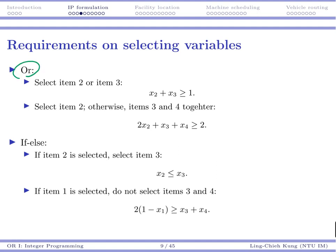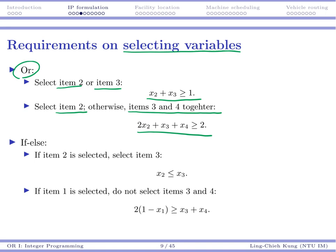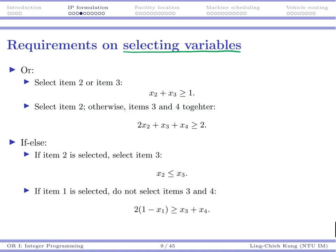You may implement an OR condition when selecting variables. For example, maybe I need to choose either item 2 or item 3 — this simply means at least 1 out of these 2 items, so x2 plus x3 must be at least 1. Or more interestingly: you need to select item 2, or if you don't, you need to select items 3 and 4 together. You may write it as: 2x2 plus x3 plus x4 is greater than or equal to 2. If x2 is 1, there is no requirement on x3 and x4. But if x2 is 0, both x3 and x4 must be exactly 1.